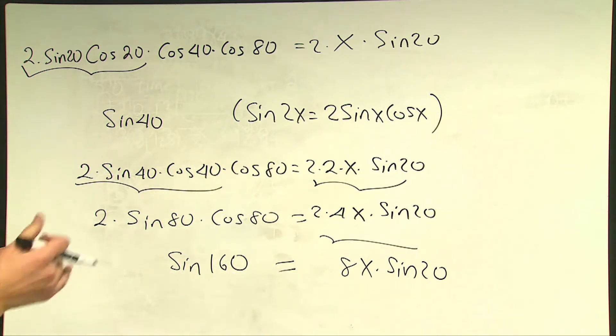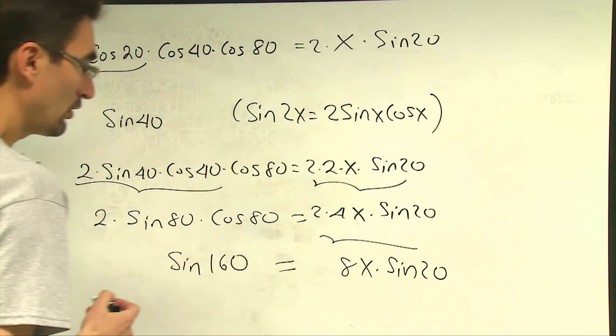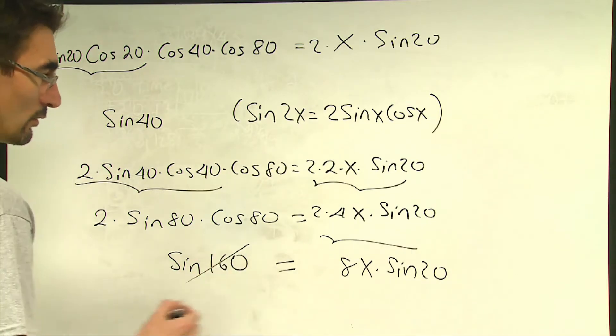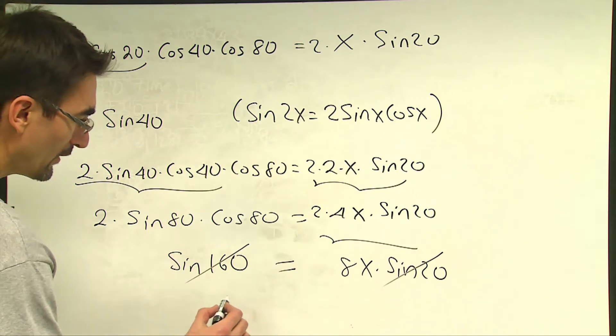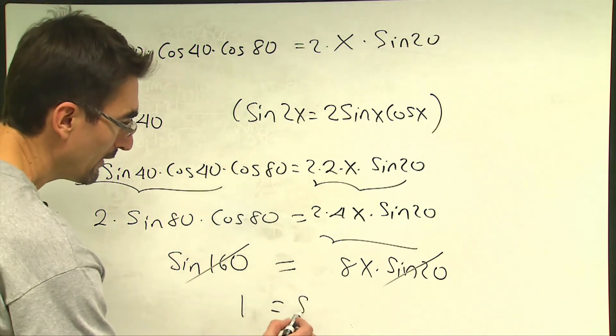But we all know that on the unit circle, sine 160 is equal to sine 20. So I can cancel out these 2 trigonometric values on both sides which will simplify to 1 equals 8x.